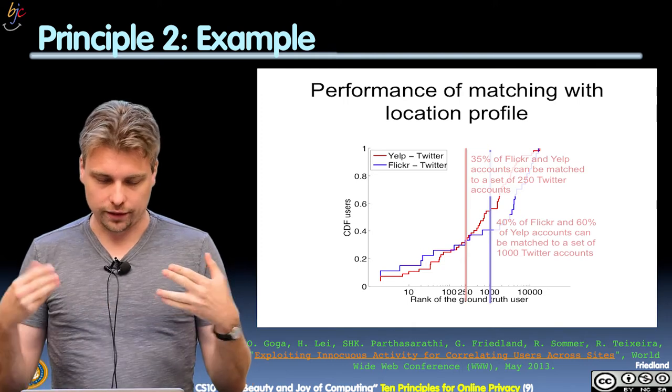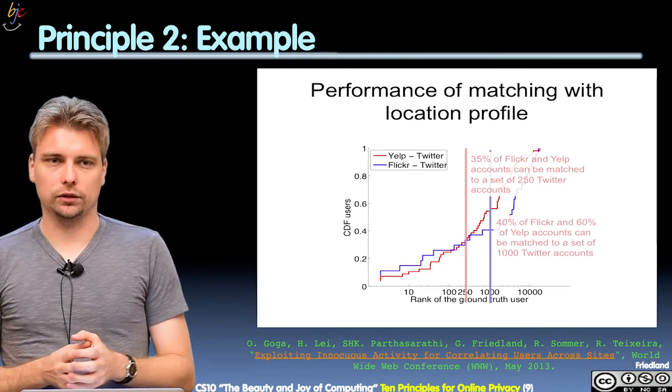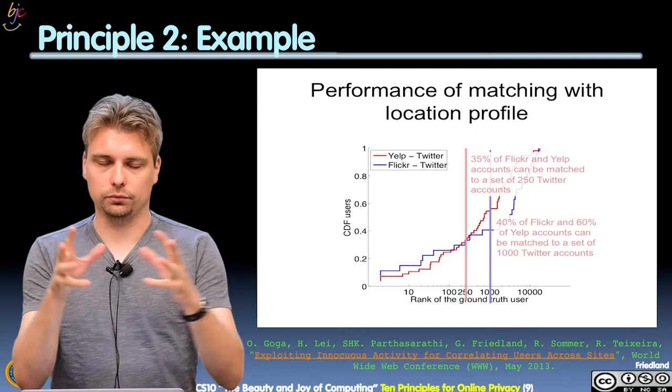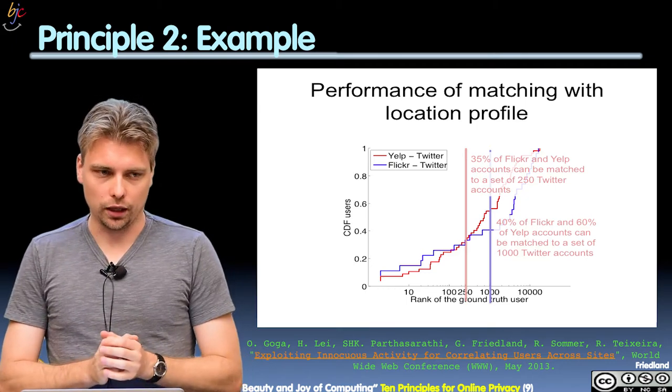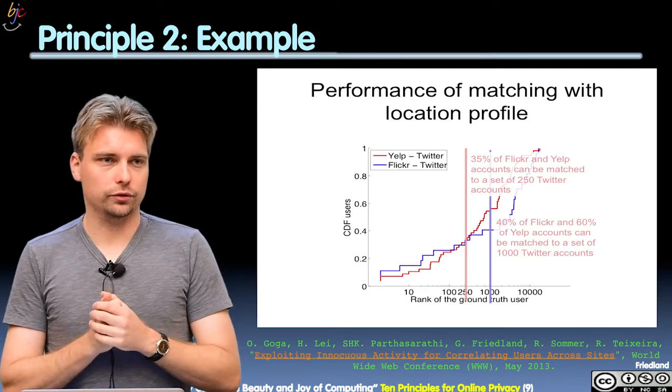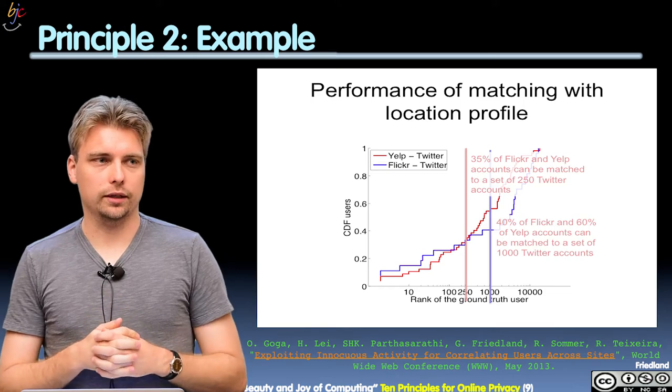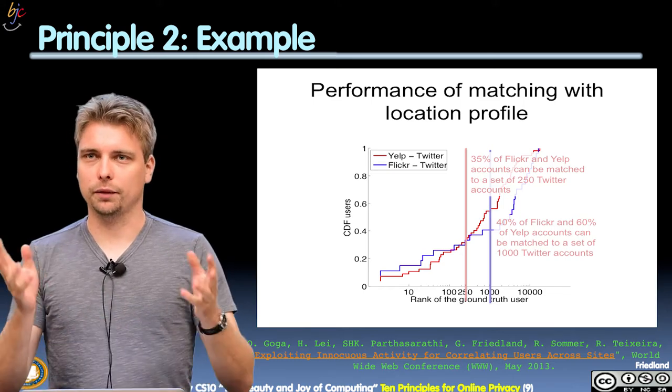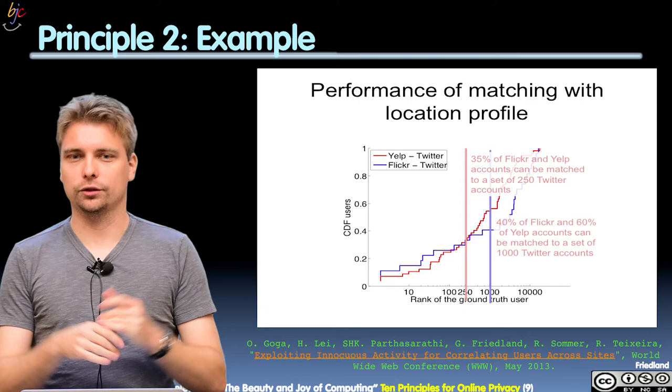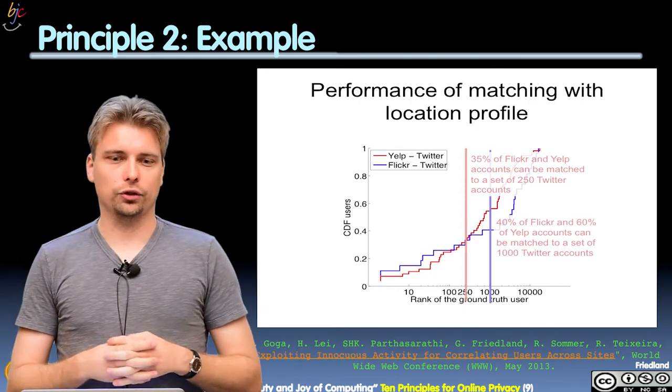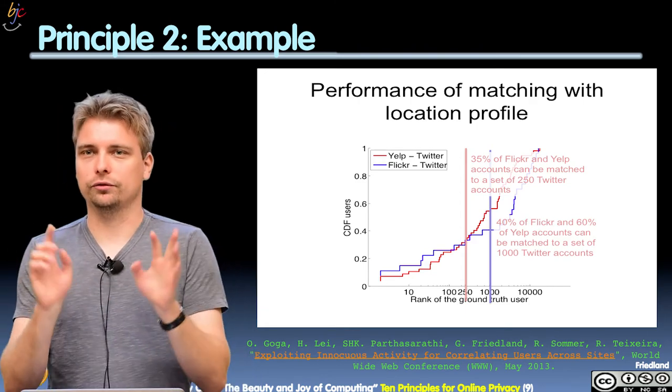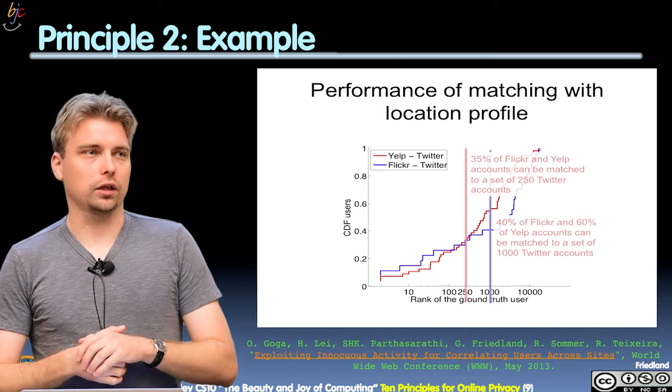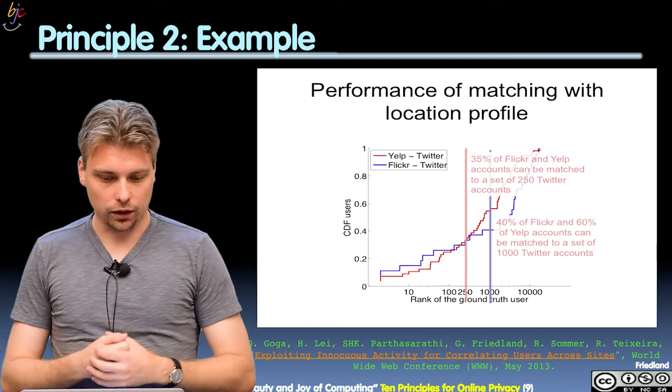So there's a lot of ways people can find out, for example, that your computer is yours. For example, you have a unique browser footprint. So there's one app you could go, maybe after the lecture, it's called Panopticlick. Just Google for that. And it's going to show you, based on your browser configuration, how unique you are. That's basically how unique you really are.